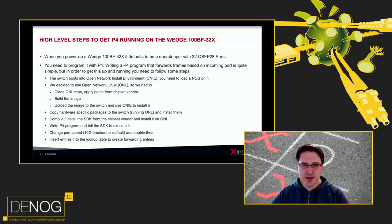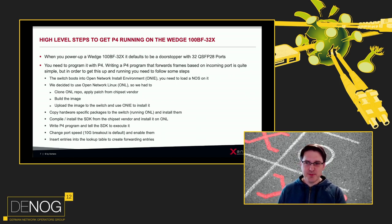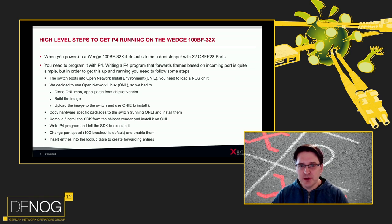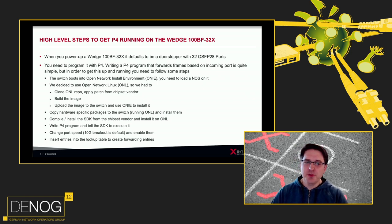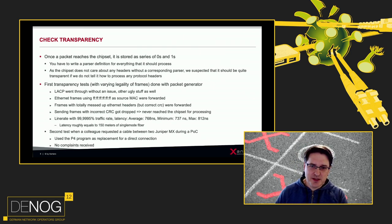Here are the high-level steps to get a P4 program running on the Wedge switch. If you power it up, it's just a door stopper with 32 100-gigabit ports. The P4 program itself is quite simple: it inspects the incoming interface, looks up a table for where to egress the frame, and forwards it out of the appropriate port. The switch boots into ONIE (Open Network Install Environment), so you load a NOS — we chose Open Network Linux. We cloned the repo, applied the vendor patch, built and uploaded the image, copied hardware-specific packages, compiled the SDK, installed it, wrote our P4 program, changed interface speeds as required, and finally populated the forwarding lookup tables.